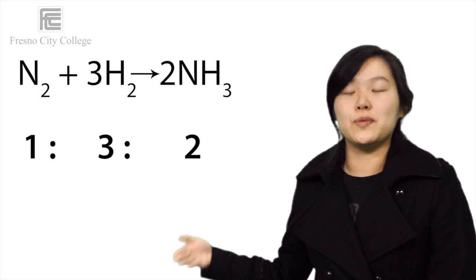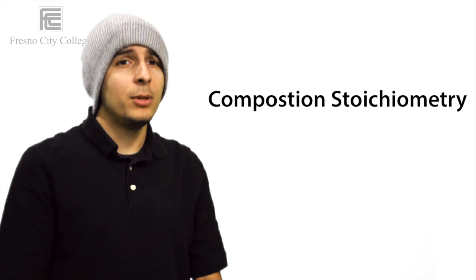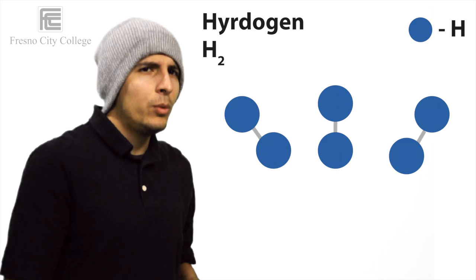Composition stoichiometry is the relationship or ratio between individual elements within a compound. For example, the ratio of hydrogen to nitrogen in the compound ammonia has 1 mole of nitrogen and 3 moles of hydrogen, which is 1 mole of ammonia respectively. Also, since the nitrogen atom is about 14 times heavier than the hydrogen atom, the mass ratio is about 14 to 3, which means that every 17 kilograms of ammonia contains 14 kilograms of nitrogen and 3 kilograms of hydrogen.